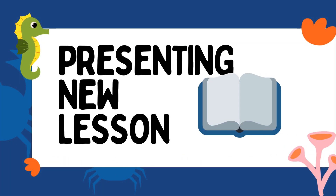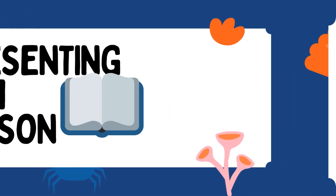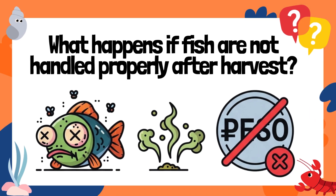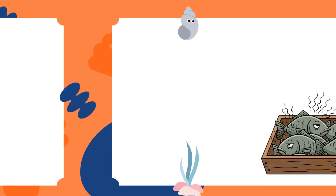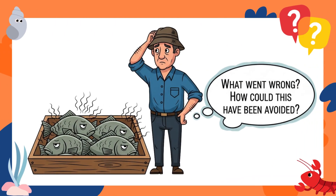Presenting New Lesson. What happens if fish are not handled properly after harvest? What went wrong? How could this have been avoided?